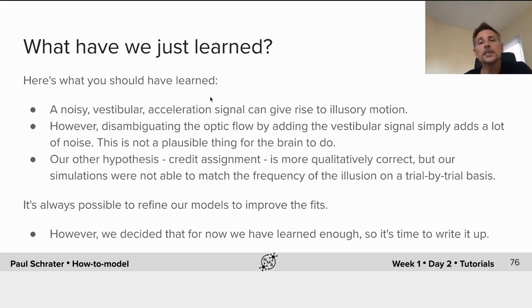However, disambiguating the optic flow by adding the vestibular signal simply added a lot of noise. This was not a plausible thing for the brain to do.